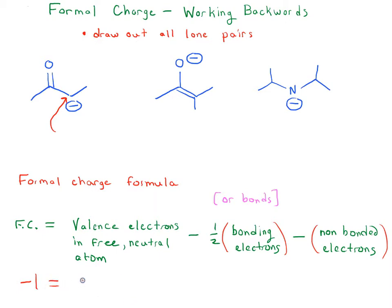And we're dealing with carbon. We're dealing with four valence electrons in the free and neutral atom. And the formal charge formula is going to be four minus one-half times the number of bonding electrons.